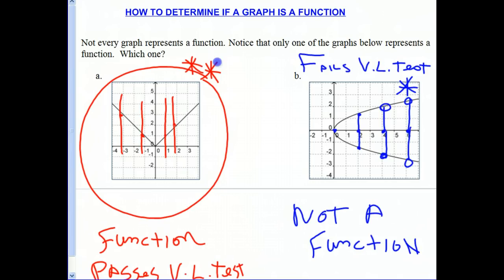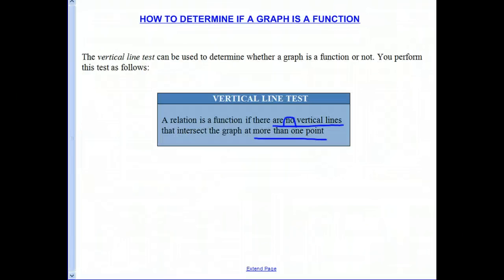So it gives us an easy way of telling whether a graph is a function. If it passes the vertical line test, it's a function. If it fails, it's not. So that is what you need to take away from this lesson. That if there are no vertical lines that intersect the graph at more than one point, then it is definitely a function.